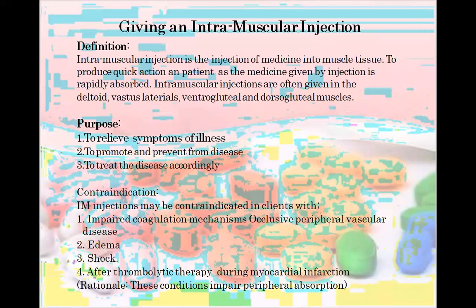The definition of intramuscular injection: it is the injection of medicine into muscle tissue to produce quick action. When the injection is inserted into the muscle, it shows quick action, and the medicine given by injection is rapidly absorbed by the patient.